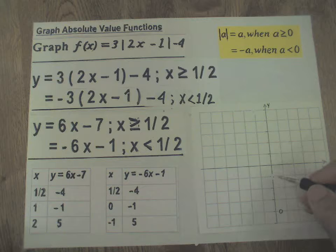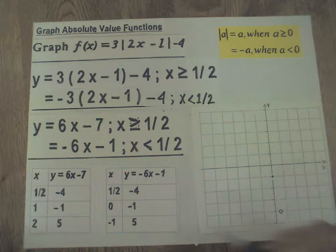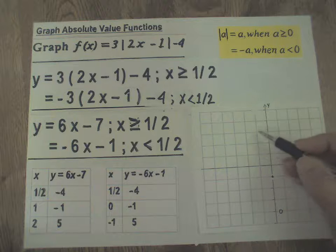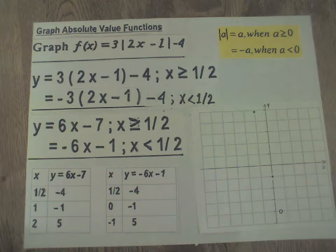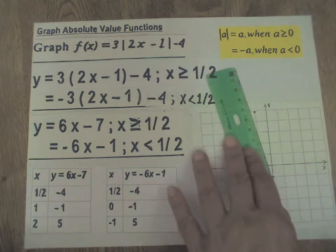0, -1 there. -1, 5, 1, 2, 3, 4, 5, there. Okay, let's join these by a straight line.